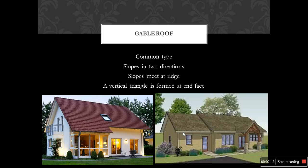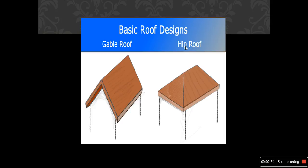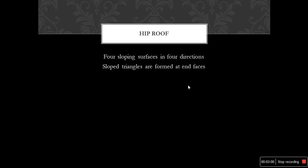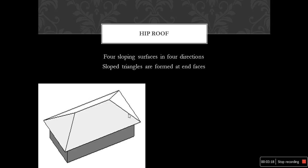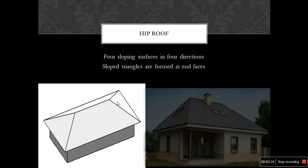The basic gable roof design has a slope in two directions. In a hip roof, there are four sloping surfaces in four directions, and slope triangles are formed at the end faces. You can see a slope triangle is formed at the end faces in four different directions — one, two, three, and four. This is an example of a hip roof.